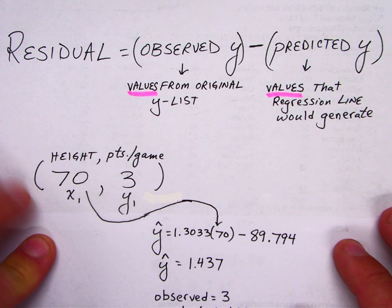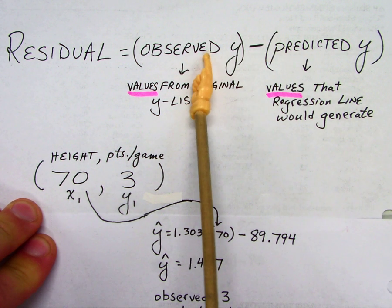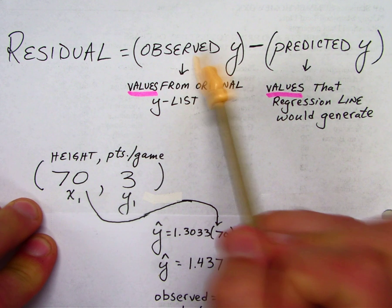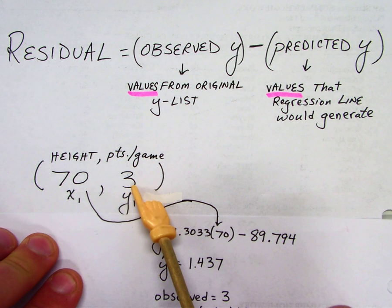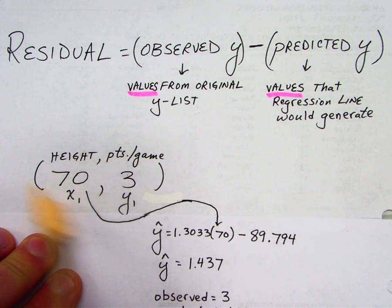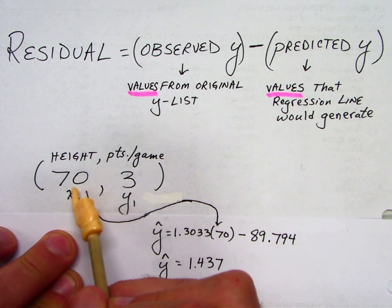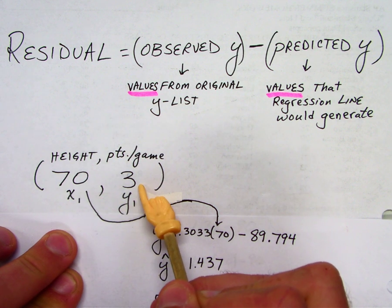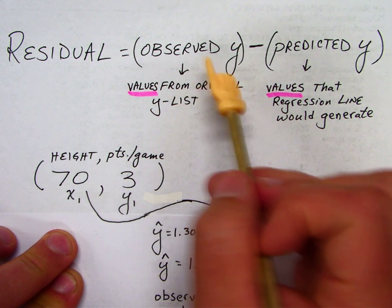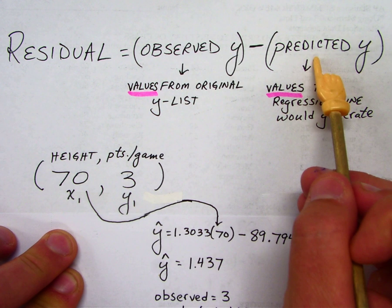Now a residual is simply a difference of two numbers, or you're just going to subtract two different numbers here. The observed y are the actual y values in your list. So this right here is my first point of my 12 points. I have a list one of all my x values and my list two of all my y values, and it's just your observed y values minus the predicted y values.